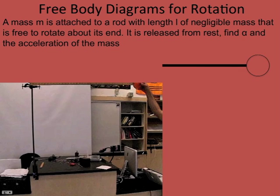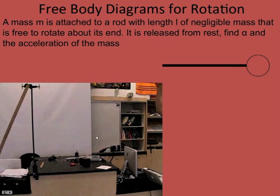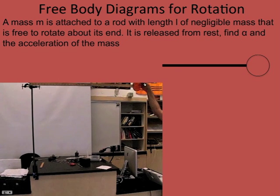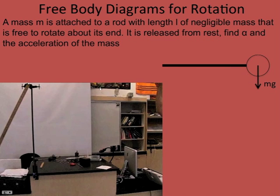We're going to start out simply. We have a mass on the end of a stick that's free to rotate about a point. We let go and it falls. What we want to know is the angular acceleration of the rod right when I let go, and then the linear acceleration of the end — right after releasing it in the horizontal position. We draw the object as simple as possible, but now it's got to be an extended object so we can show lever arms.